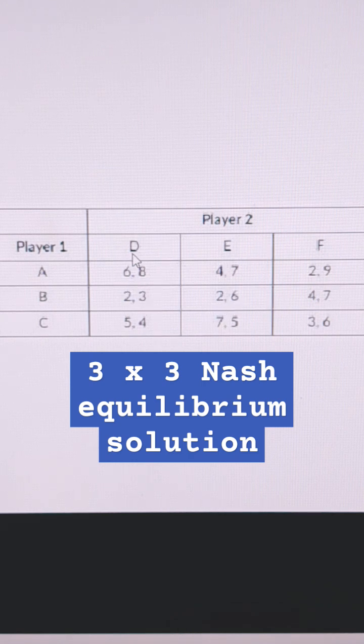If Player 2 does D, Player 1 should take 6, which is strategy A. And if Player 2 does E, what should Player 1 do? They should go get 7.